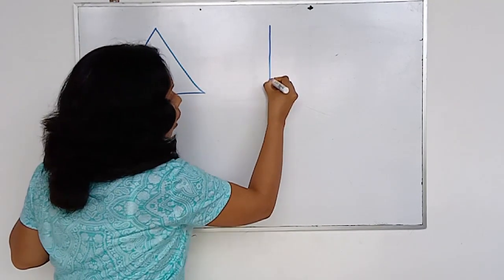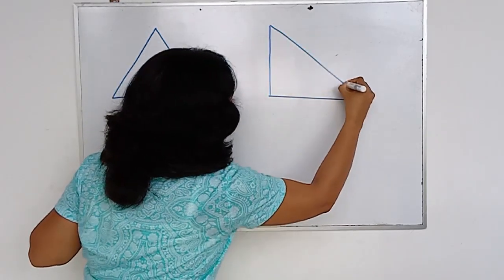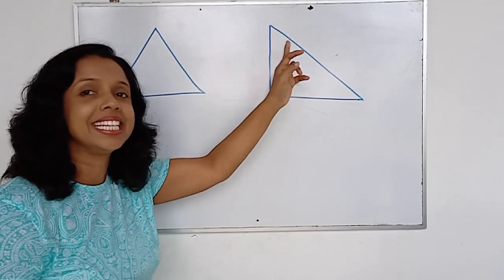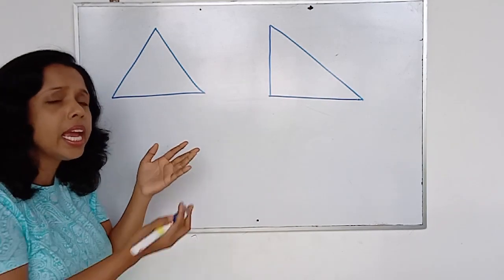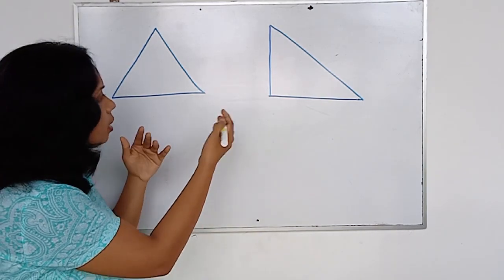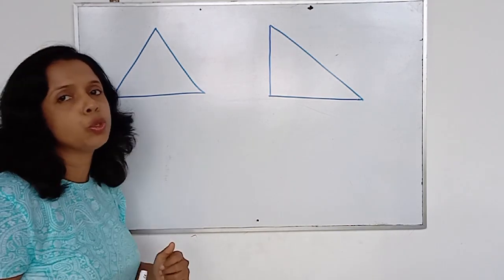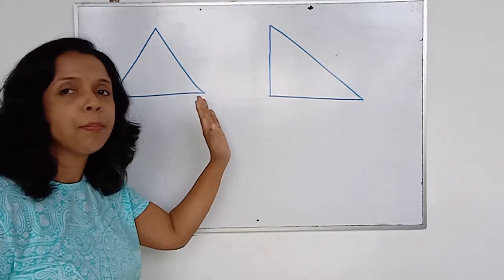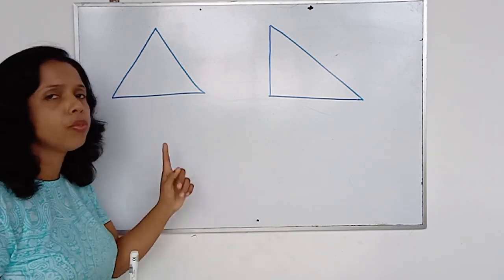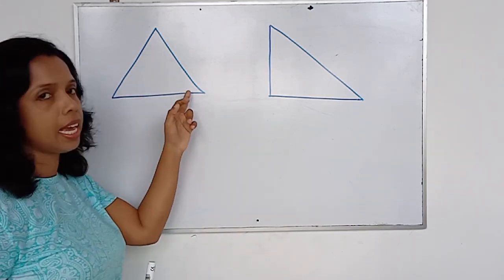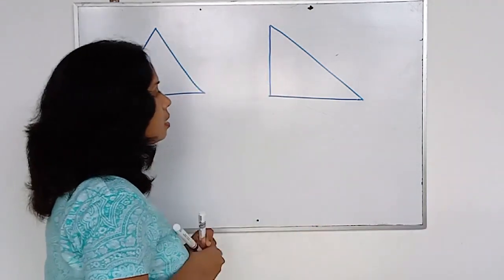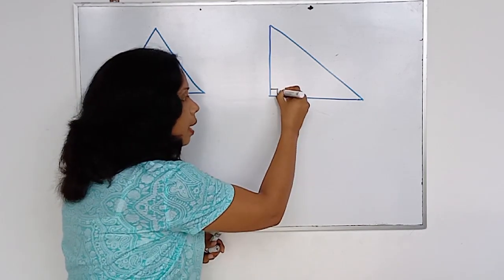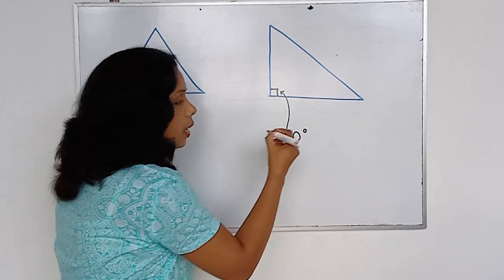Now tell me, what is this? Again, it's a triangle — having three sides, three interior angles. Can you see any difference between these two triangles? For me, both of them are triangles having three sides and three interior angles. But if I measure each interior angle, I can see this one is 90 degrees. That means this is a right angle with 90 degrees.